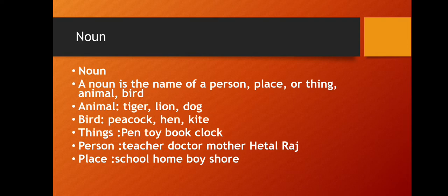Before starting the activity, let's do a revision. So far we have learned eight parts of speech, but a ninth has been added. First is noun. Noun is the name of a person, place, thing, animal or bird - like tiger, peacock, pen, book, teacher, doctor. Place includes school, home, bay, shore.